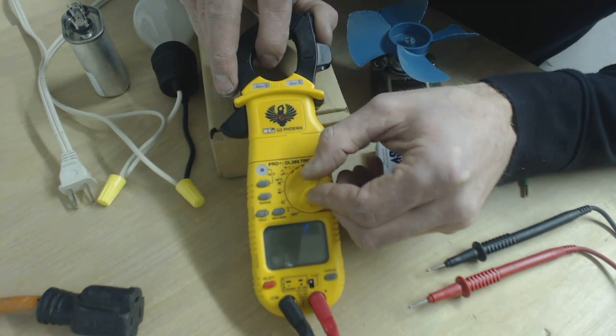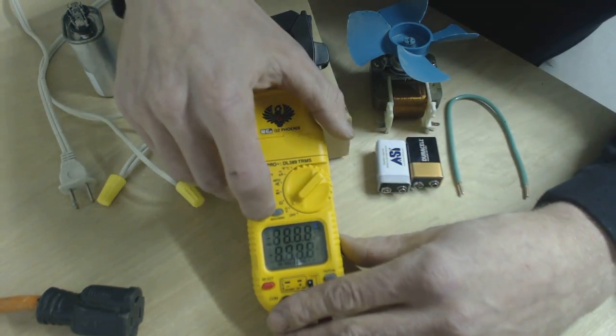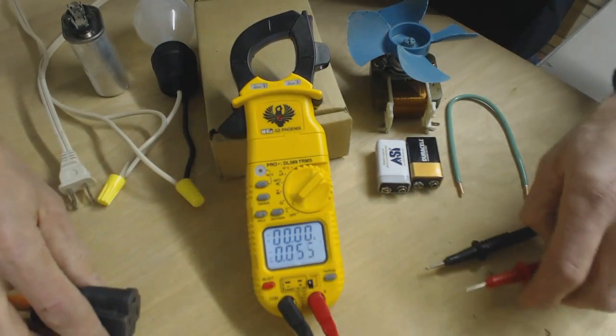Alright, today I'm going to give you the rundown on the HVAC multimeter. We're going to turn it to volts AC first and we're going to turn the light on just so you can see what we're doing.